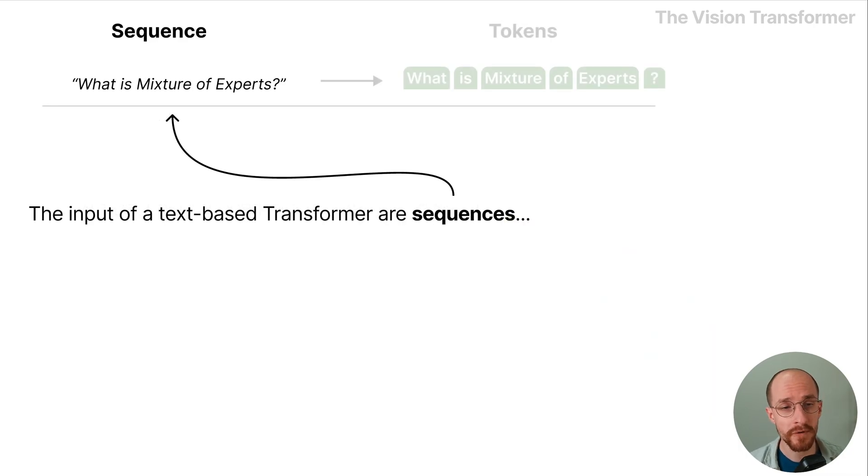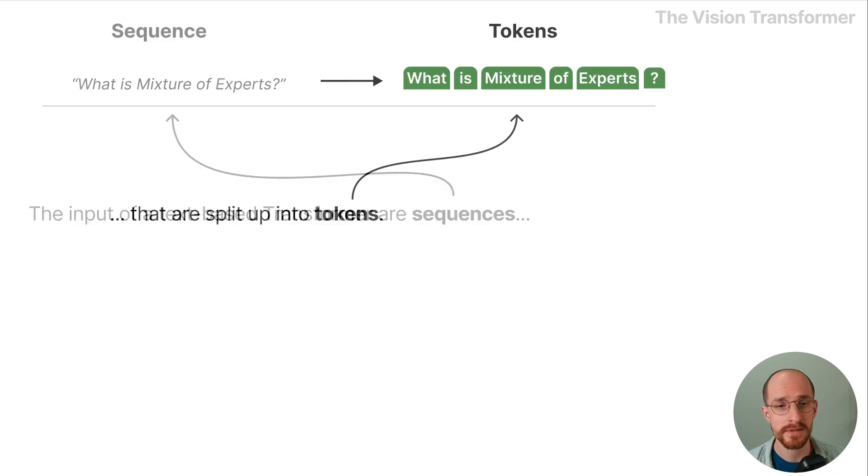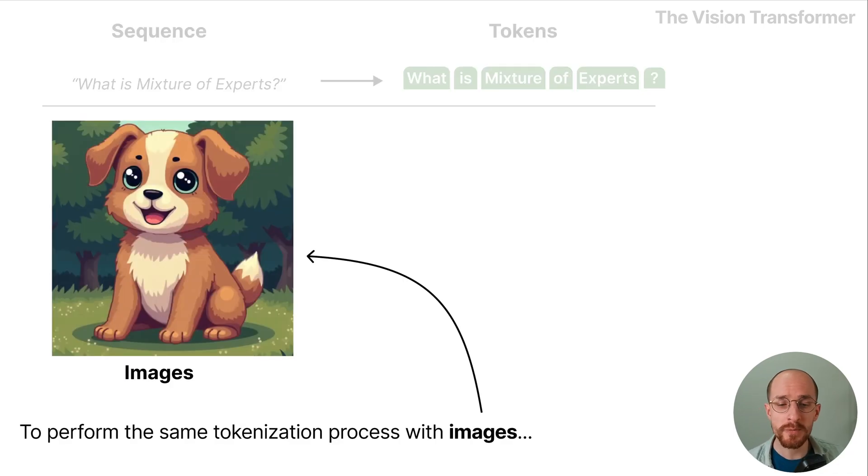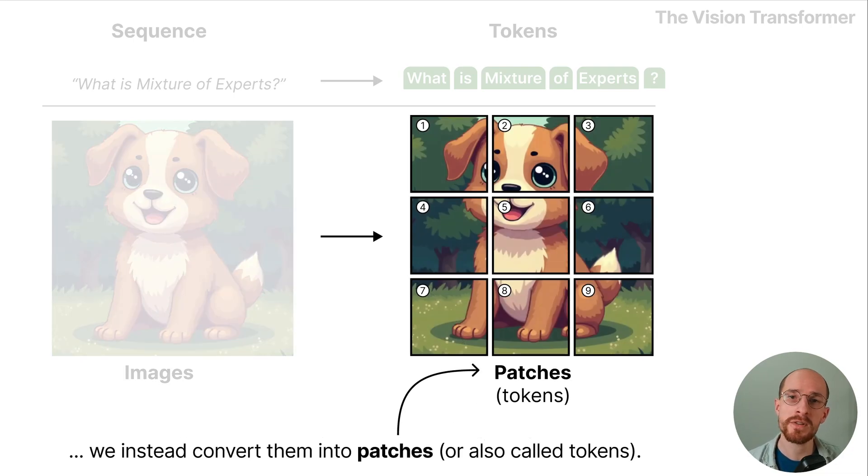The input of a text-based transformer are sequences that are split up into tokens. To perform the same tokenization process with images we instead convert them into patches and we can also call these tokens.